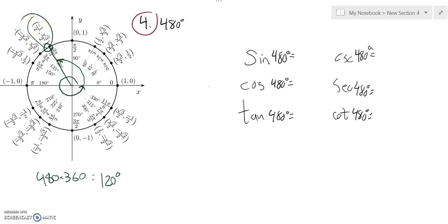So then I can use that to get at my exact values. I know that sine is associated with y, its height. Cosine is associated with x, its width. So sine would be negative root 3 over 2. Cosine would be negative 1 half.